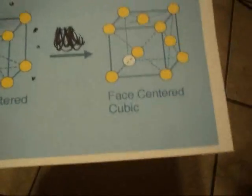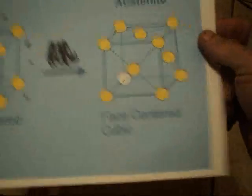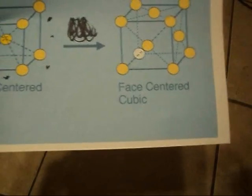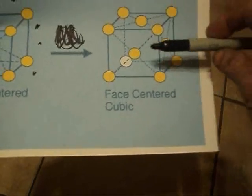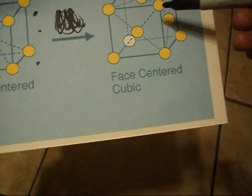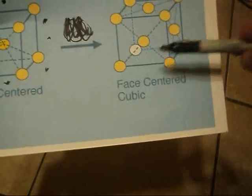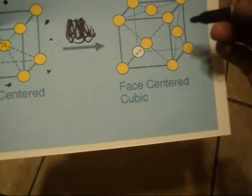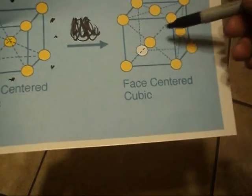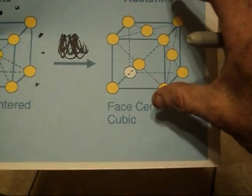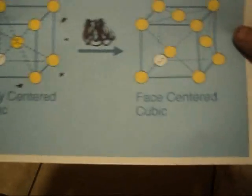Over here when you heat it up, it transforms into something called austenite, which is a face centered cubic structure. What really happens is this lattice expands greatly compared to this one. And you get, as well as having the atoms on all eight corners of this box, you have one on each face. Alright, there's nothing in the middle. I don't believe—I'm not positive about that, but I don't believe there is. But I know this is a very, very highly expanded version of this on a molecular basis.